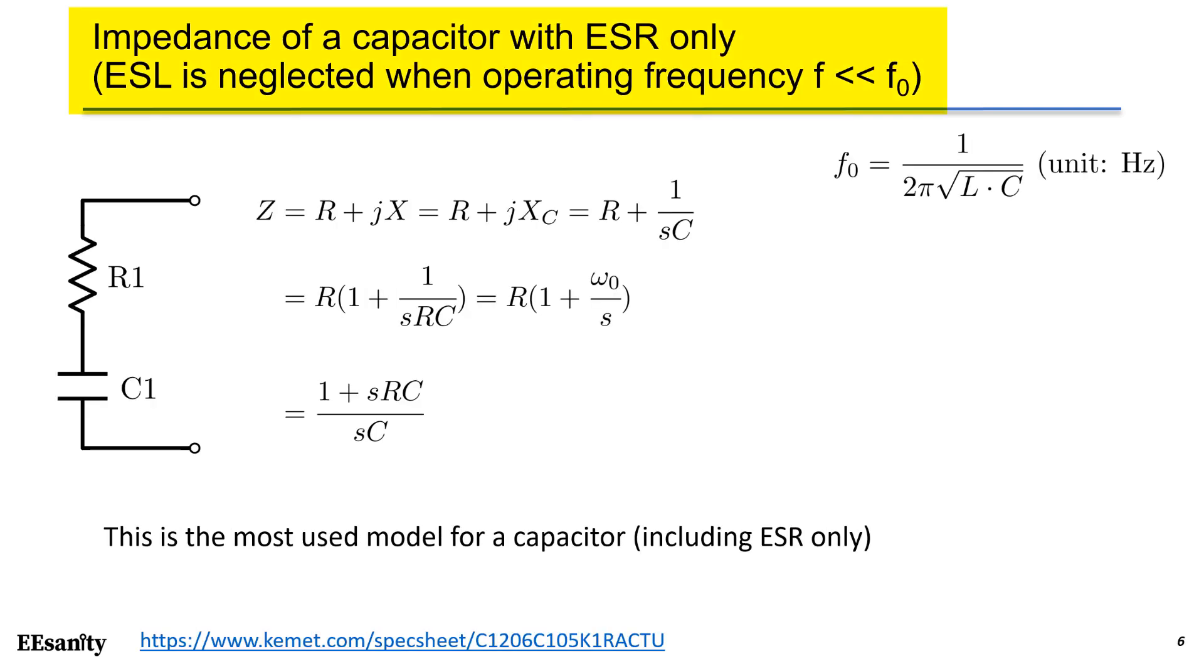Often times, ESL can be neglected since the circuit is operating way below the self-resonant frequency. Therefore, ESL impedance will be too small to consider. This can simplify the design procedure and reduce the simulation model complexity. As you can see here, most of the time you can use just ESR or resistor in series with a capacitor to complete the capacitor model. Here the impedance equation for this model. Finally, we can see the impedance is R plus 1 over SC.